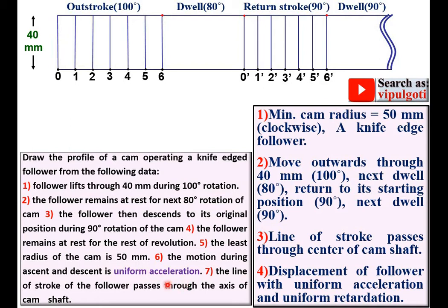Now look at the description once again. The motion during ascent and descent is uniform acceleration. And so that we have to divide the center line of this outstroke into the 6 equal parts.